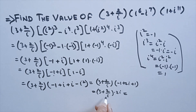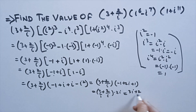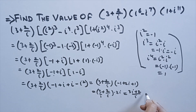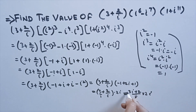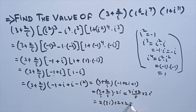Now (3 + 2/i) × 2i: take LCM as i, giving (3i + 2)/i × 2i. The i in the denominator cancels with the 2i multiplied, giving 2 × (3i + 2) = 6i + 4. So the final answer is 4 + 6i.